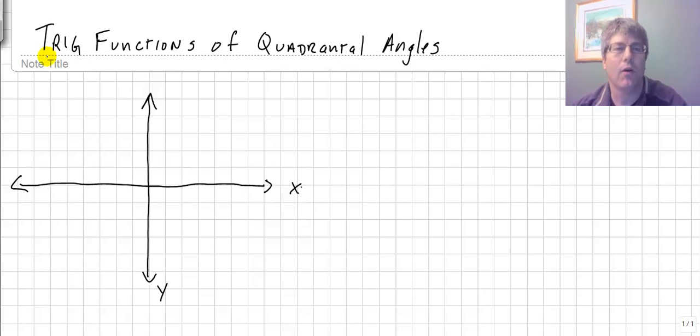Welcome back. In this video, we are going to determine the six trigonometric functions of quadrantal angles. Quadrantal angles are those angles which fall on the x and y axis. So a quadrantal angle is any angle that might be 90 degrees, 180, 270, 360. So really any angle that's a multiple of 90 from standard position will be a quadrantal angle.